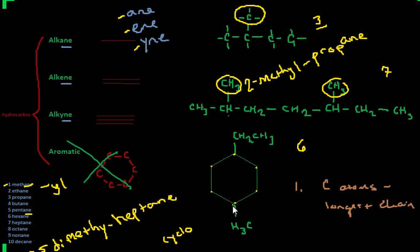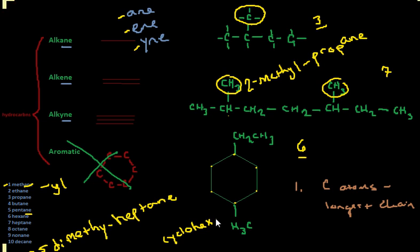We're going to have one, two, three, four, five, six on our longest chain — remember that's what we came up with before. We look down here, six is hexane. So we'll do the hex, and look at the suffix — we have ane here. We do want to keep ane because it's only single bonds. If it were double bonds, then we would go with ene as our ending. So we put hexane — so we have cyclohexane.